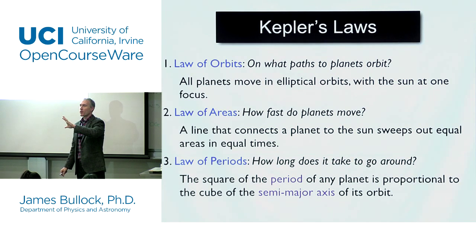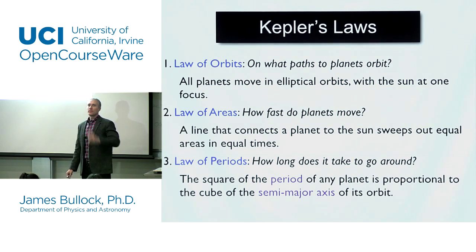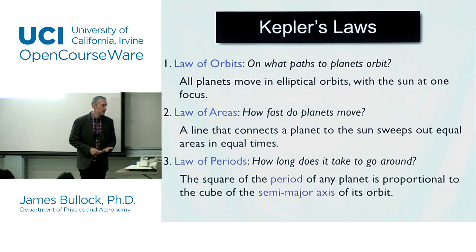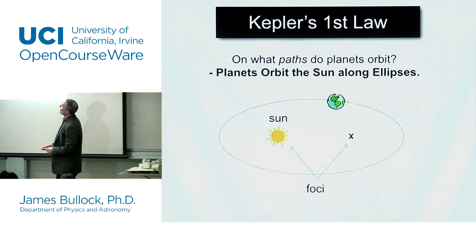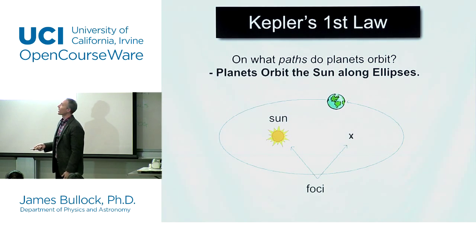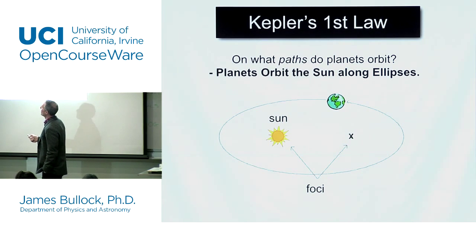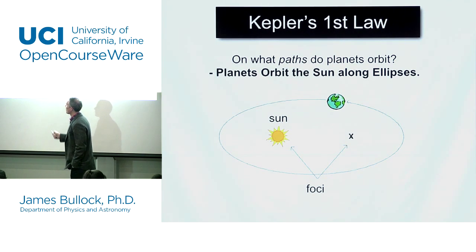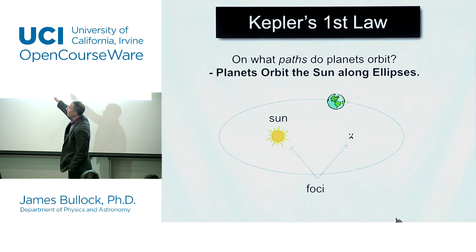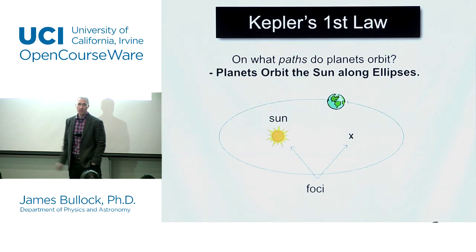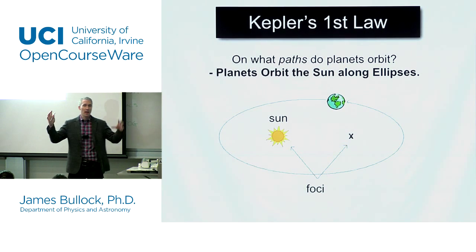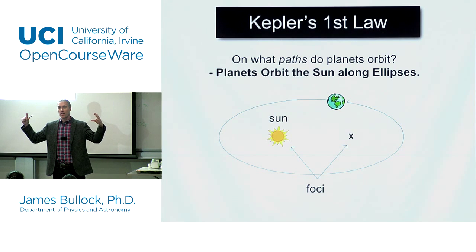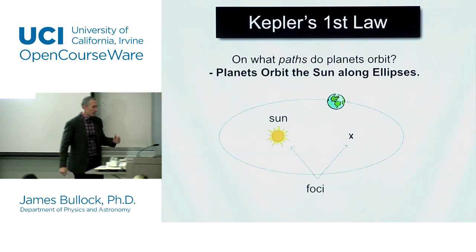Kepler's First Law: on what paths do the planets orbit? They orbit on ellipses, with the sun at one focus. The other focus is just there for bookkeeping purposes. The planets go around on the ellipse. The ellipses aren't all the same shape — some can be almost circles, some can be really flattened. But in general, this describes all orbits.